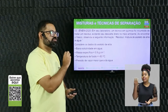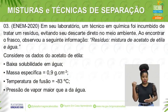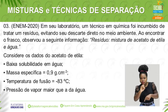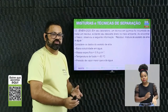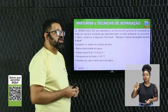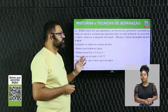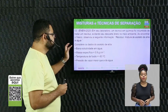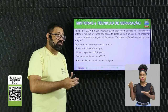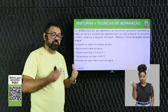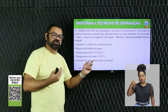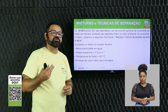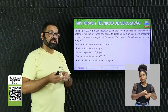Mais uma questão, ENEM 2020. Em seu laboratório, um técnico em química foi incumbido de tratar um resíduo — uma mistura de acetato de etila e água — evitando o descarte direto no meio ambiente. Os dados do acetato de etila: baixa solubilidade em água; massa específica (densidade) de 0,9 g/cm³; temperatura de fusão de −83 °C; pressão de vapor maior que a da água.